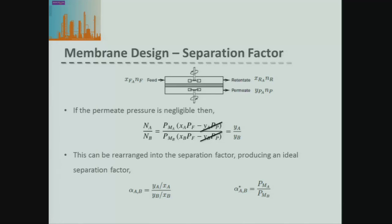This confirms our ideal separation factor that we've been working toward, just looking at flows through the membrane. We note that this ideal separation factor — denoted with an asterisk — is different from our general separation factor.